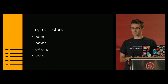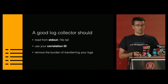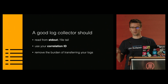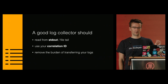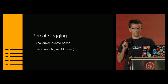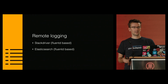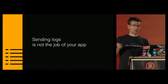At many companies, the policy of handling logs and handling secrets are really different, so your logs may bleed secrets. Some great log collectors out there: Fluentd, Logstash, SyslogNG, and RSysLog. A good log collector should read directly from standard output or a log file tail, use the correlation ID you provide, and in general remove the burden of transferring your logs. These are separate processes on the host where your application is running, doing one job: watching the log output of your app and delivering it to the remote logging service. Logging services like Stackdriver and Elasticsearch are both Fluentd-based. Remember: sending logs is not the job of your app.